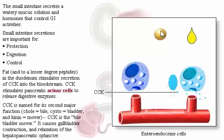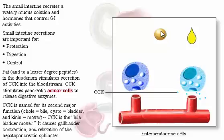CCK is named for its second major function. 'Chole' means bile, 'cysto' means bladder, and 'kinin' means mover. Therefore, CCK is the bile-bladder mover. It causes gallbladder contraction and relaxation of the hepatopancreatic sphincter.